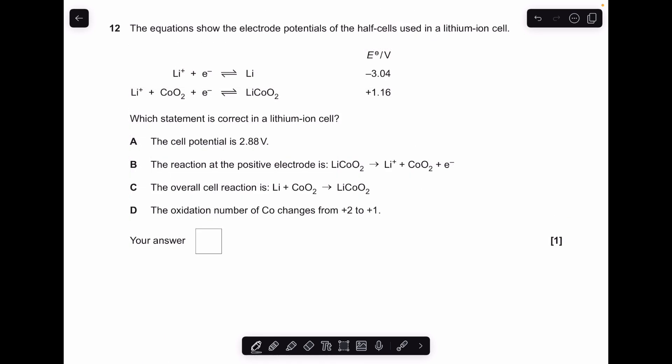Moving on to number 12. So we'll just run through the statements and see which one is the correct one. So statement A, the cell potential is 2.88 volts. So that's not right. The cell potential is actually 4.2 volts for this. And that's because we take the most positive electrode potential and subtract from that the least positive one. Statement B, the reaction at the positive electrode is that there. That statement's wrong because the positive electrode is the one with the most positive electrode potential. So it's the bottom one. And this equation is going to run in the forwards direction. Whereas this equation here is the reverse of that.